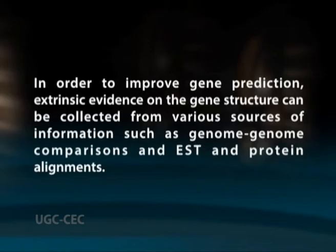Since sequence features such as codon bias and splicing signals vary from organism to organism, it is expected that gene finders may not perform optimally in a foreign genome. While the practice of annotating a genome with a foreign gene finder is commonplace, its consequences are not widely understood. In order to improve gene prediction, extrinsic evidence on gene structure can be collected from various sources such as genome-genome comparisons and EST and protein alignments.